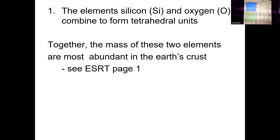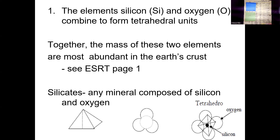If you remember from page one of our reference table, silicon and oxygen by mass make up the most things in the crust. So silicon and oxygen are really popular. If you look through the composition section on your reference table for page 16, you'll see that silicon and oxygen pop up the most because they're in most of the rocks around here. So what's a tetrahedral unit? It's this shape. Each one of these little ball things represents either a silicon or an oxygen. Anytime silicon and oxygen combine, they make this pyramid shape. What do you need to know? Silicon and oxygen make a tetrahedral unit. That's all I've ever seen them ask about it — maybe three or four times in all the years I've been teaching.